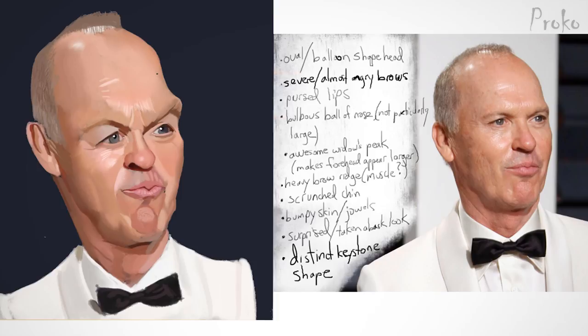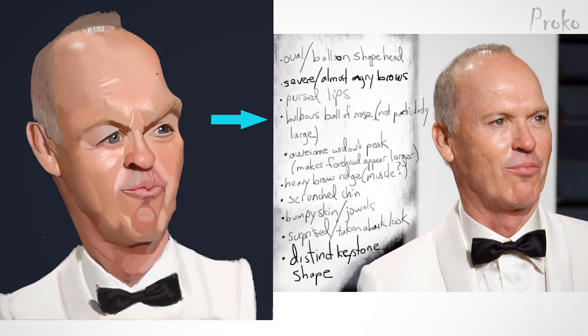Let's look at your checklist and see what you came up with. An oval or balloon-shaped head — I can see that; I might say more like an egg, but balloon works because it's wider at the top and narrow at the bottom. Severe, almost angry brows. Pursed lips. A bulbous ball of a nose — not particularly large, I'd agree with that. A widow's peak that makes the forehead appear larger — it's actually more of a receding hairline, but it's a very distinctive shape for him.